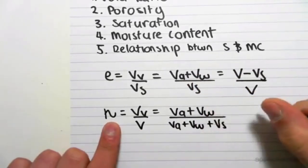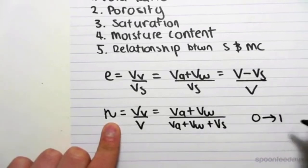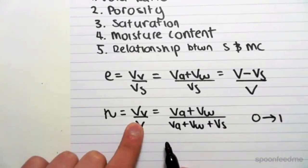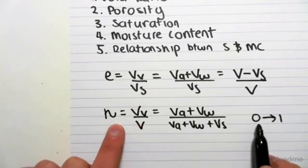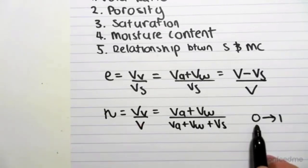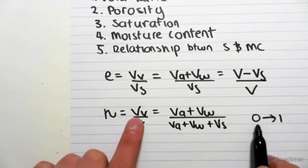This value ranges from 0 to 1. And if you think about it, if we have no voids, we're going to have 0 on the top, which makes our answer 0. And if our substance is only voids, it's going to be 1.